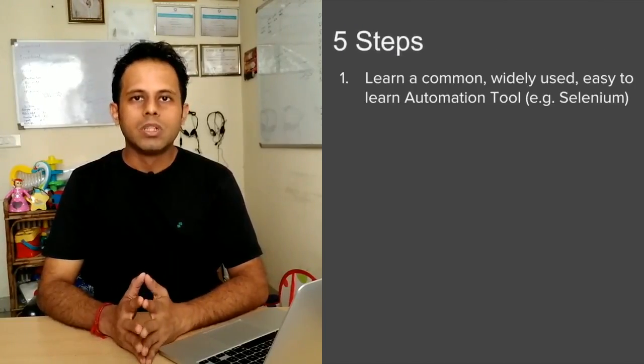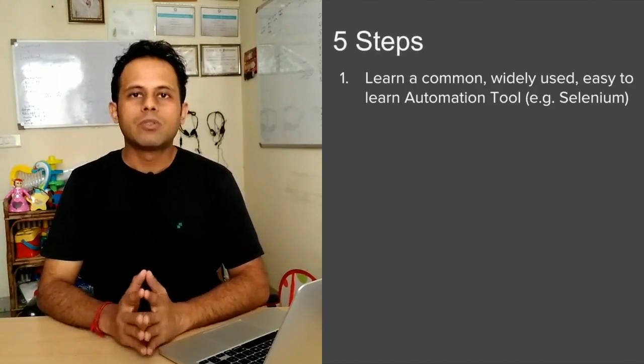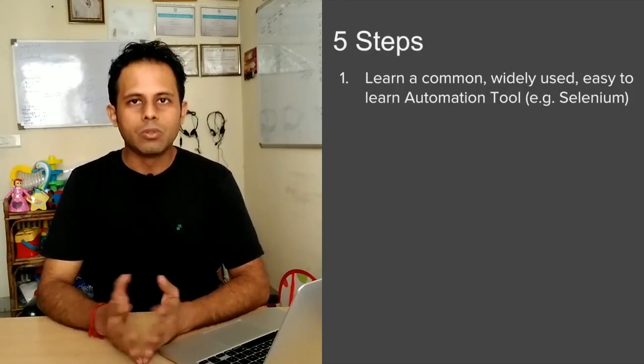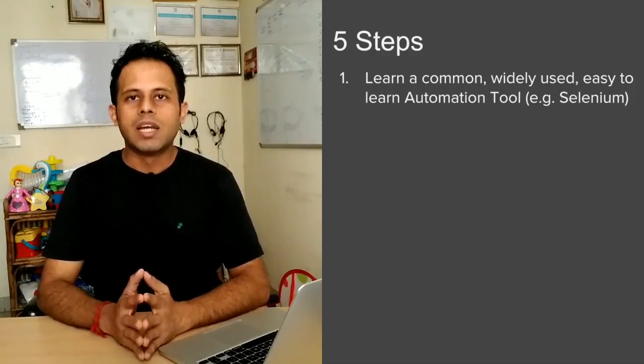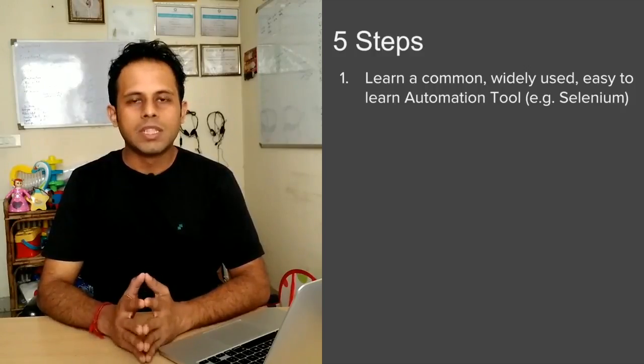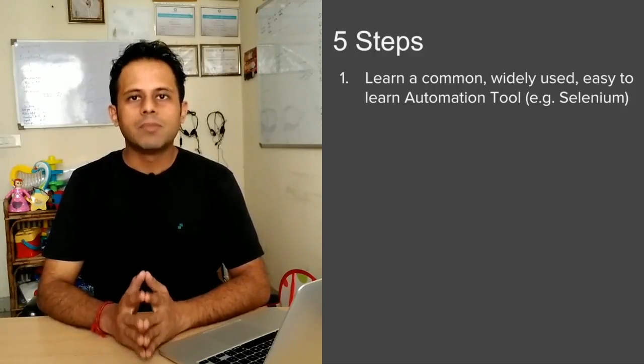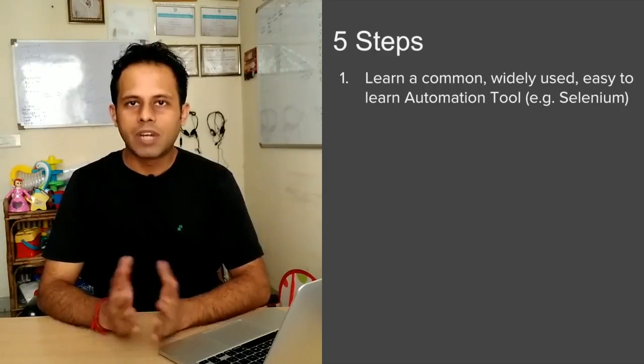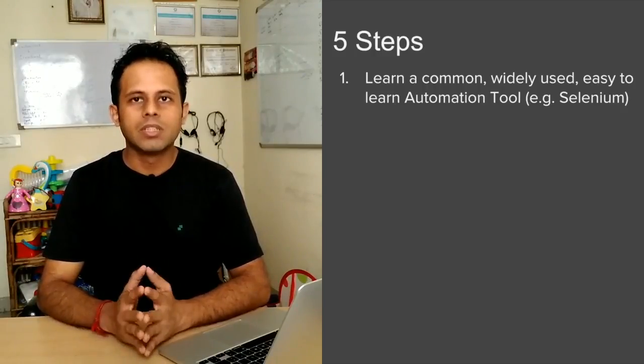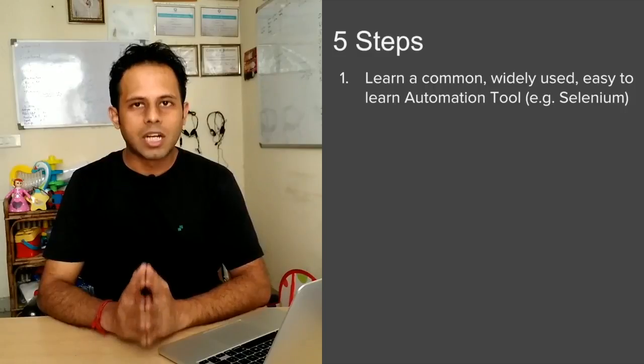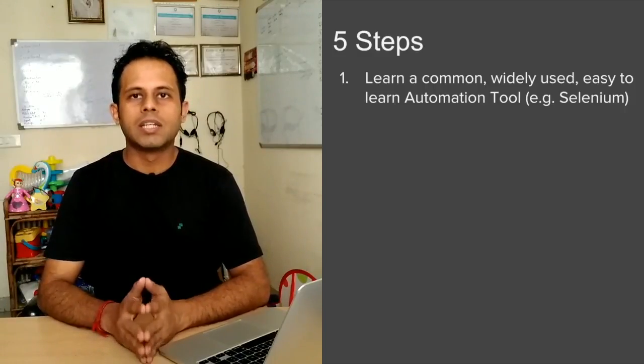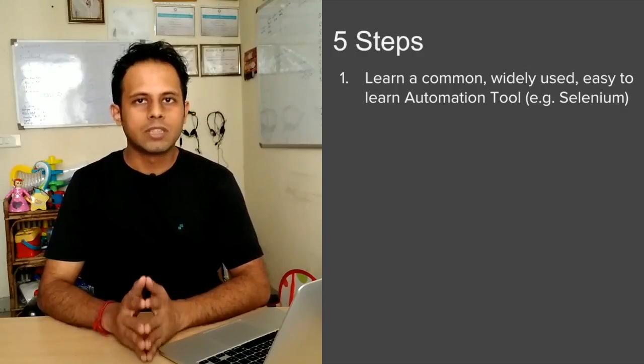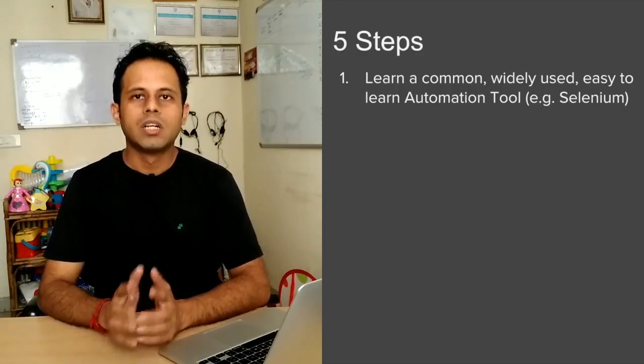So there are basic five things that you need to do. The first one is you have to select an automation tool or library that is very common and widely used and is easy to learn. One of the options that you can go with is Selenium. Selenium is open source, it is very widely used, and it is easy to learn. So this is something that you can start with and you will find lots and lots of freely available online resources and tutorials on this.